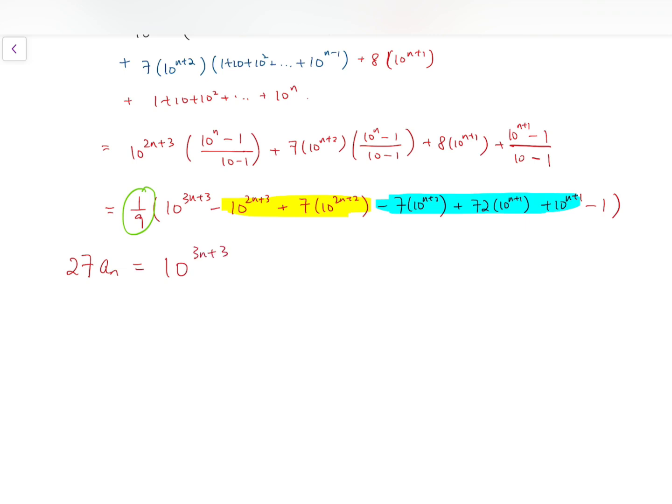So let's see. First, the 10 to the power 3n plus 3 remain untouched. While for the next one, I can take out minus 10 to the power 2n plus 2. So we have 10 minus 7 inside the bracket. And then for the blue block, I'm going to take out plus 10 to the power n plus 1, the smaller index multiplied by minus 70 plus 72 plus 1. And then finally, the minus 1 at the end. So if we simplify this, you will see 10 to the power 3n plus 3, minus 3 times 10 to the power 2n plus 2, plus 3 times 10 to the power n plus 1, minus 1.